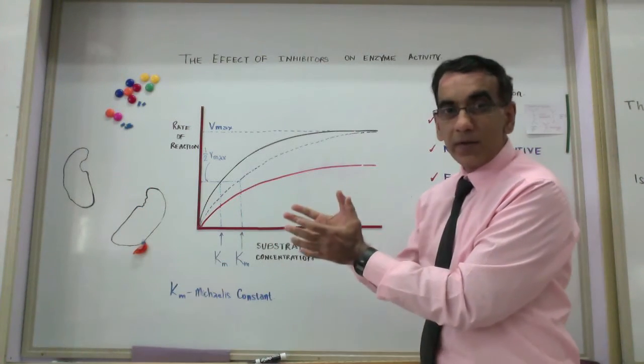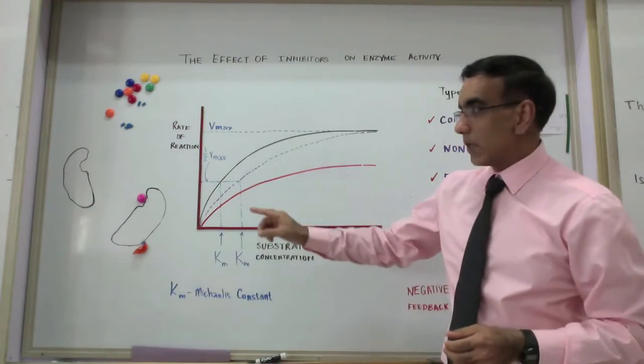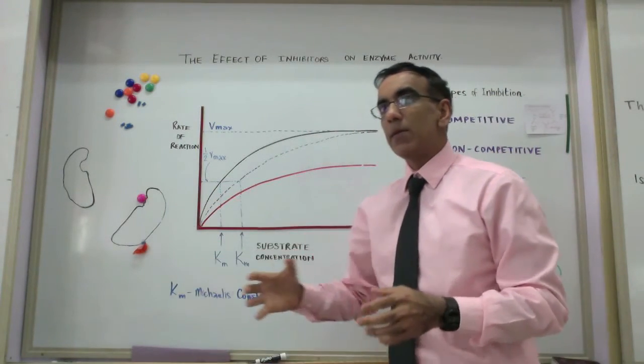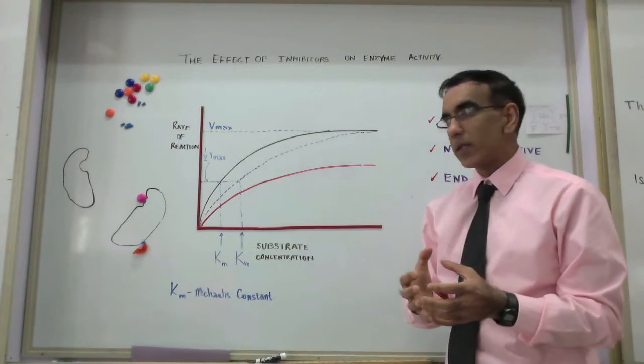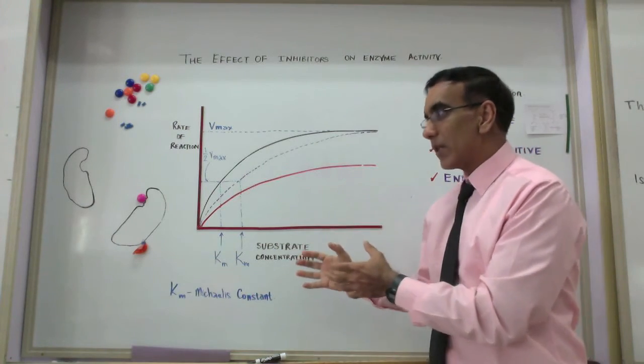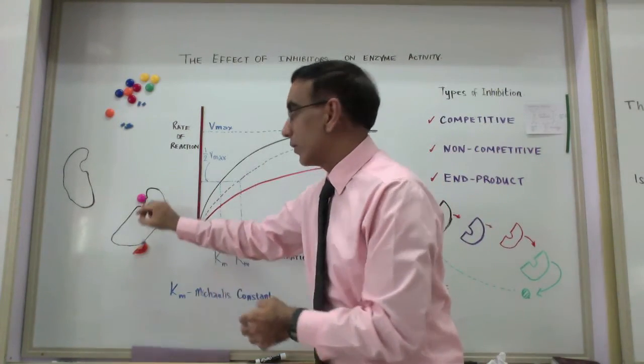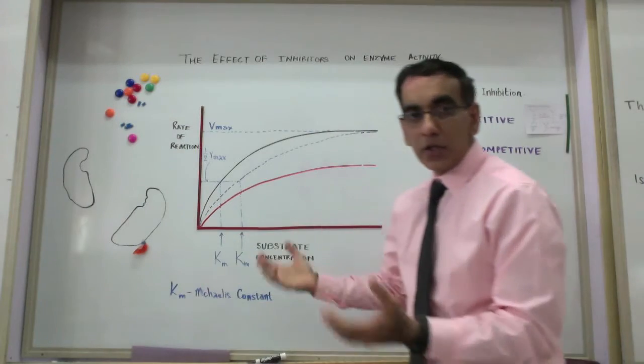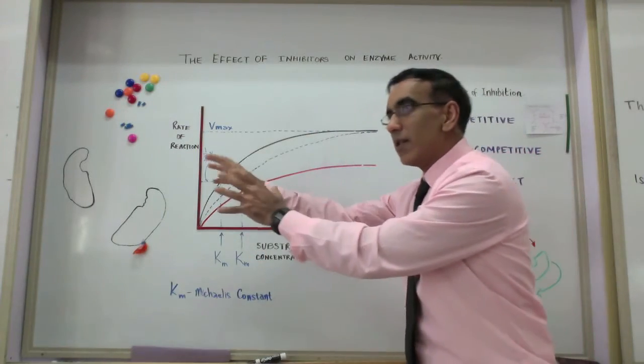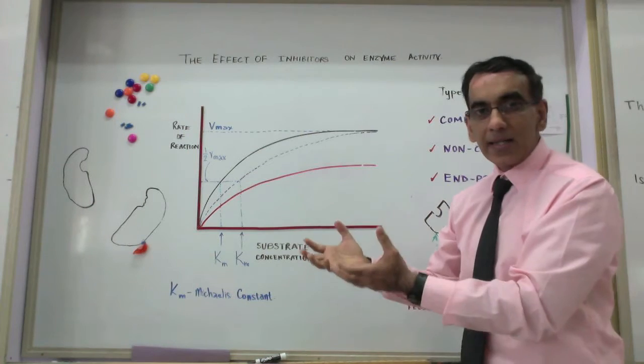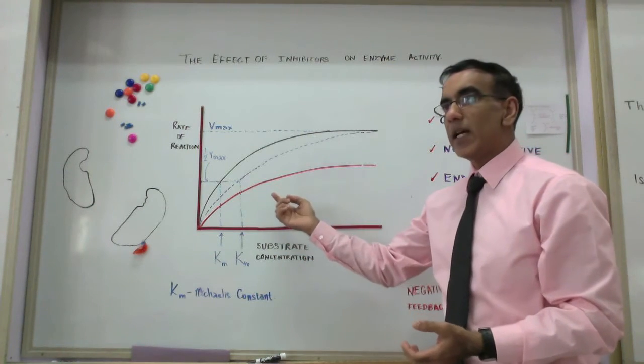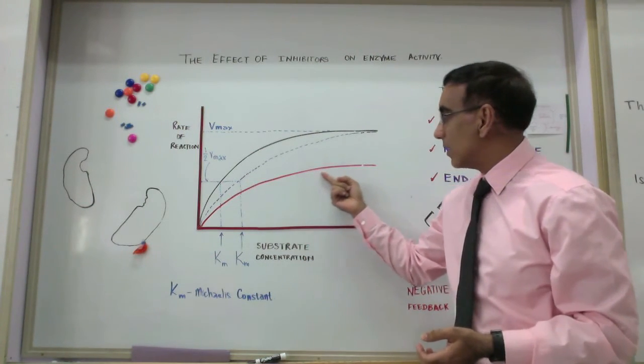Once the structure of the active site is changed, then it becomes impossible for the substrate and the enzyme to form the enzyme-substrate complex. So what effectively happens is some of the enzyme molecules are made non-functional, leaving the reaction mix with a handicap or less enzymes. And with less enzymes, the maximum rate is limited.